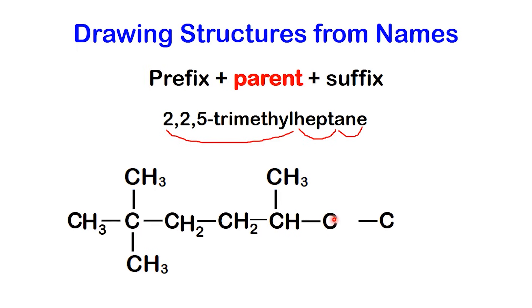Carbon 6 is bonded to carbon 5 and carbon 7, so it needs two hydrogens. Finally, carbon 7 is at the other end of the chain, connected only to carbon 6, so just like carbon 1, it will need three hydrogens. And that's it. We've built the structure of 2,2,5-trimethylheptane directly from its name.